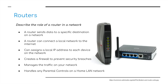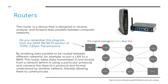Finally, routers — these are devices we have in our homes, offices, or schools which enable multiple computers to connect to the internet. The syllabus says we need to describe the role of a router in a network. A router sends data to a specific destination on a network, can connect a local network to the internet, assigns a local IP address to each device on the network, creates a firewall to prevent security breaches, manages traffic on your network, and handles parental controls on a home LAN. This links back to the data transmission diagram showing packets of data moving between different nodes and switches.